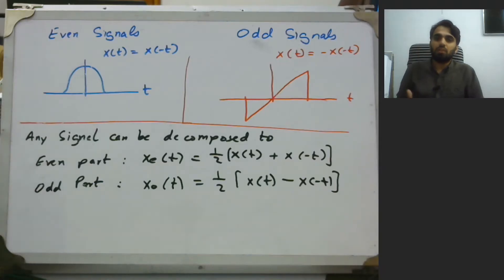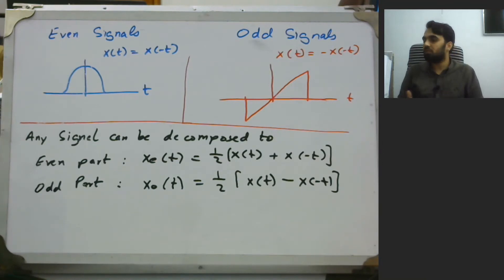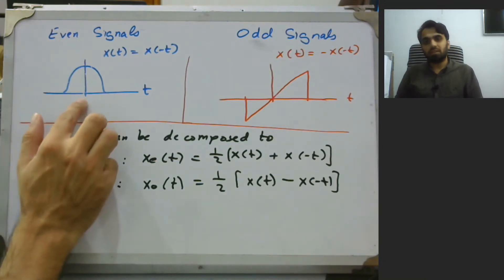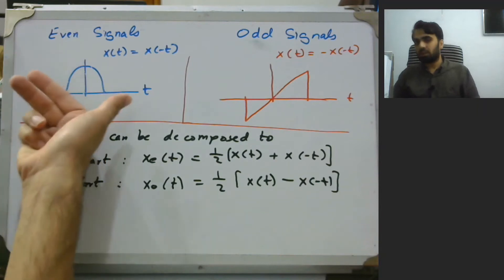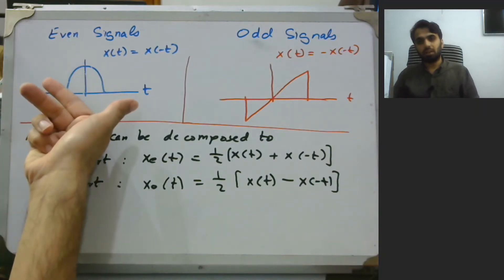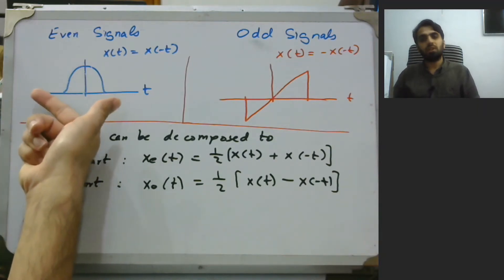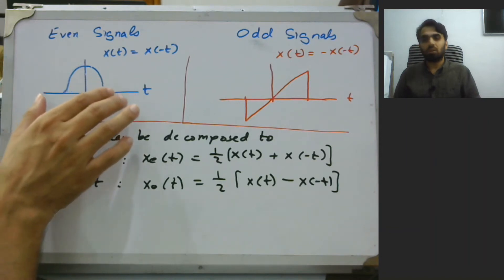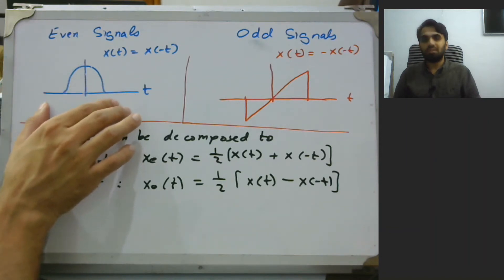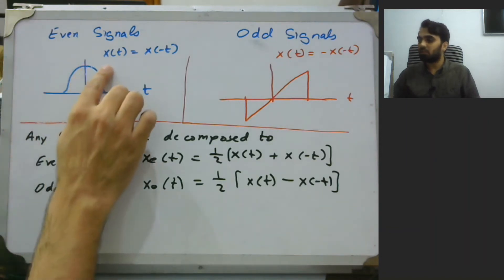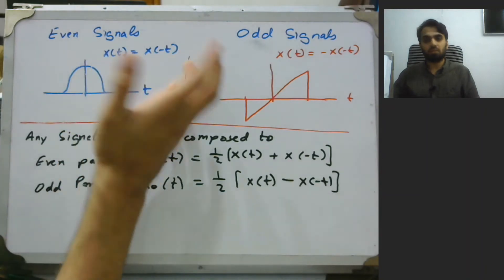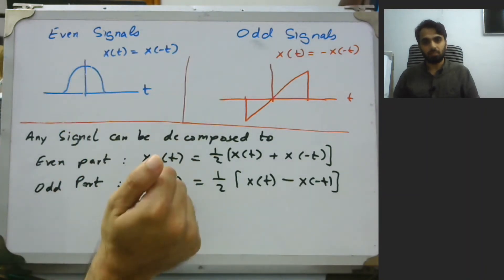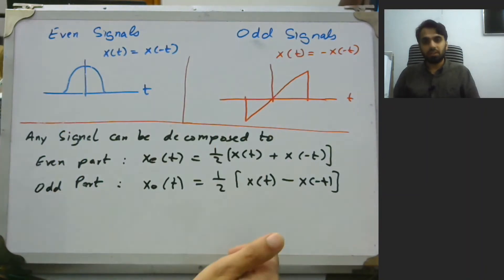For even signals, we have a signal which is symmetric around its origin. This means that if we flip the signal, it would not be different from the original signal — that is why it's called an even signal. This means that x(t) is equivalent to x(-t).